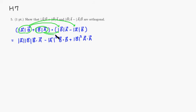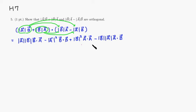The last term is distributing to the second factor, which gives us minus magnitude of vector B times magnitude of vector A, then A dot B. Now we can clean up a little. Magnitude of A times magnitude of B here, and magnitude of A and magnitude of B there — and B dot A and A dot B are the same thing since the dot product is commutative. So those two terms cancel.